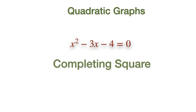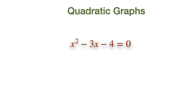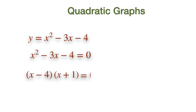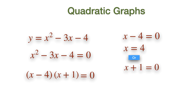We can also use the completing square method. In this case, the equation easily factorizes into two factors of (X minus 4) and (X plus 1). X can be found by equating X minus 4 to zero and rearranging, which gives us X equals to 4. Likewise, equating the second factor X plus 1 to zero gives X equal to minus 1. The roots of the equation are X equals to 4 and X equal to minus 1.